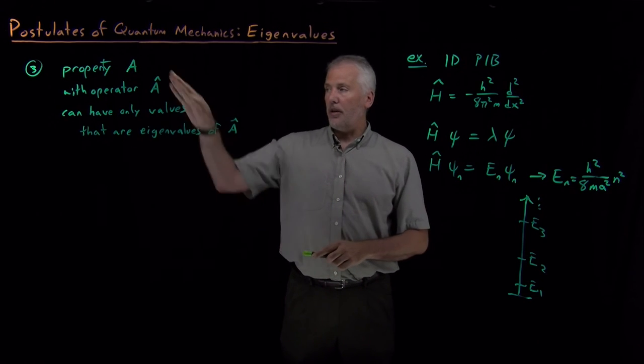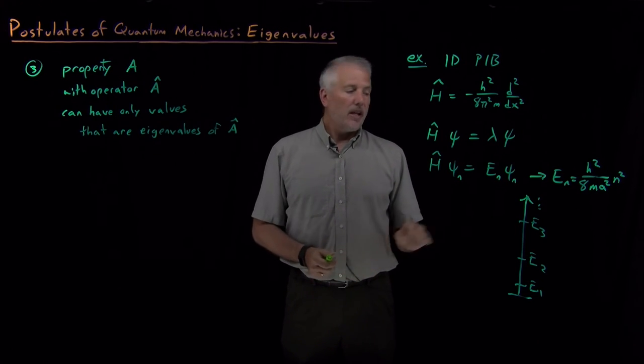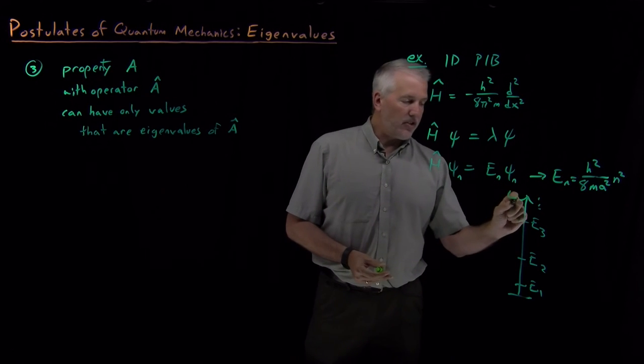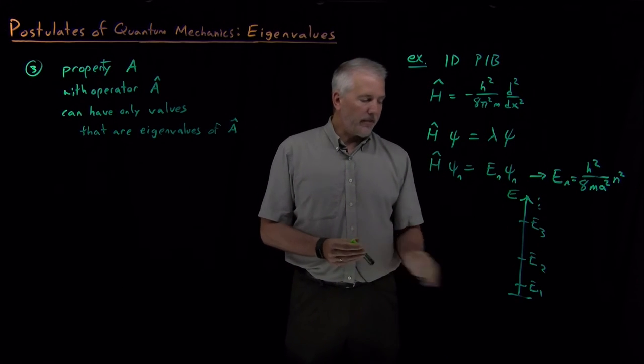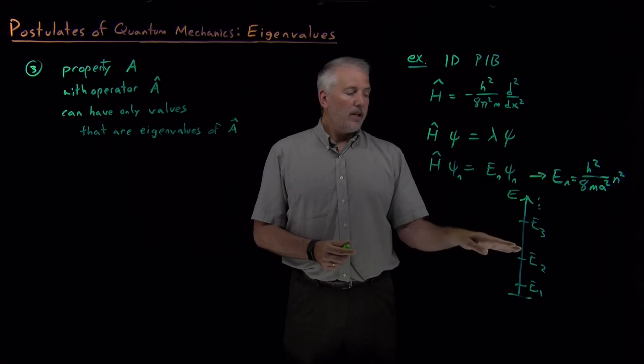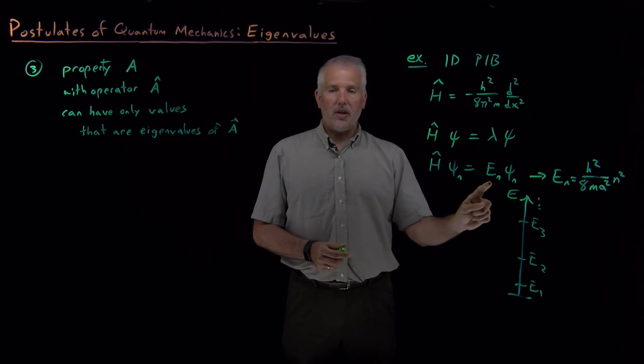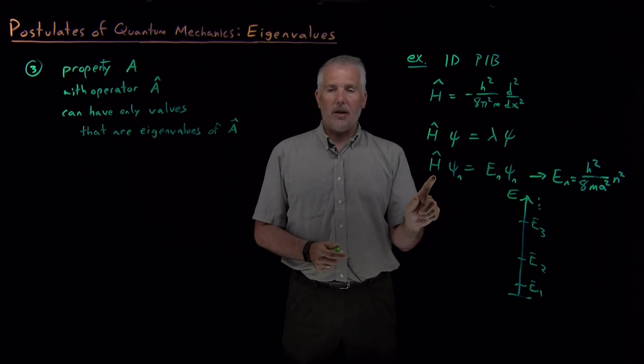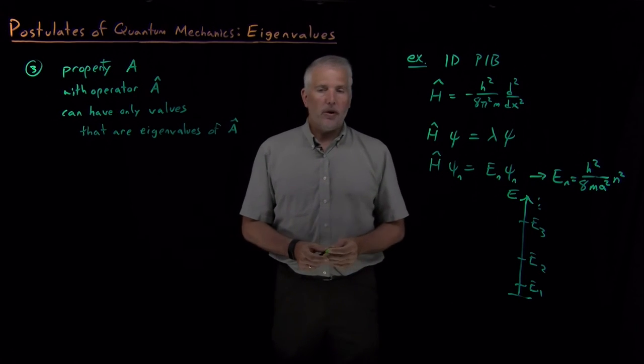So this is an example of the third postulate in action. The only allowed values of the energy are these specific values, E1, E2, and E3, and so on, and that's because those specifically are the eigenvalues of the Hamiltonian operator.